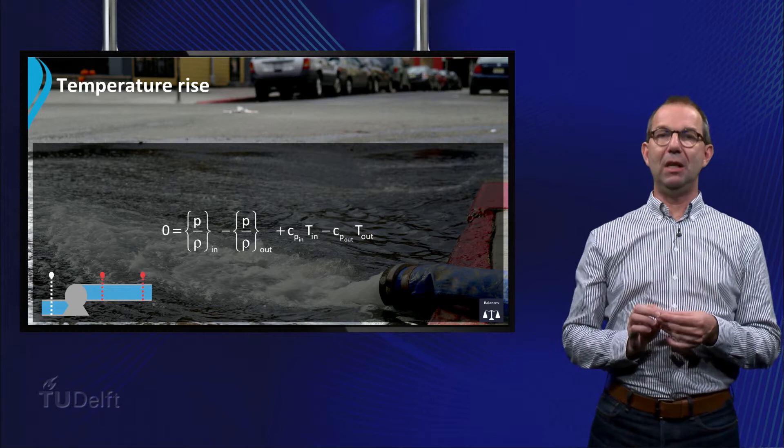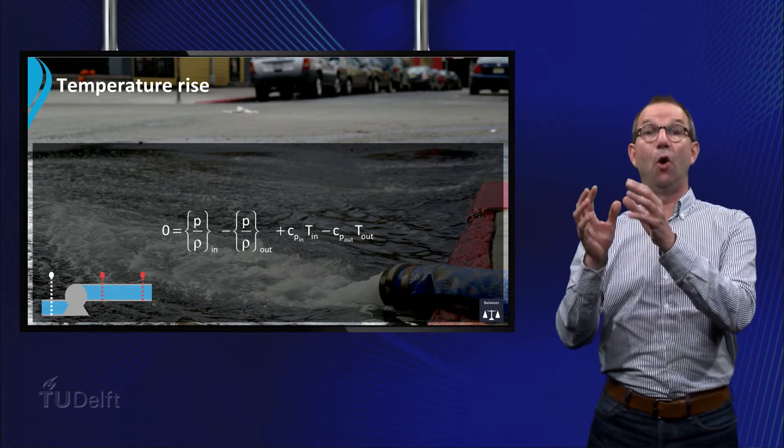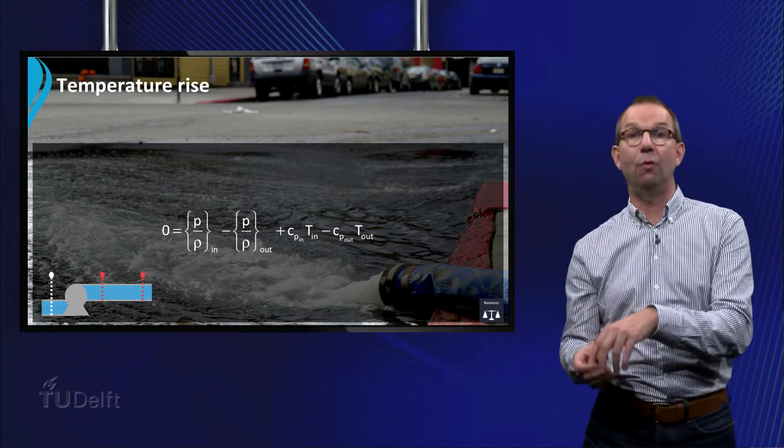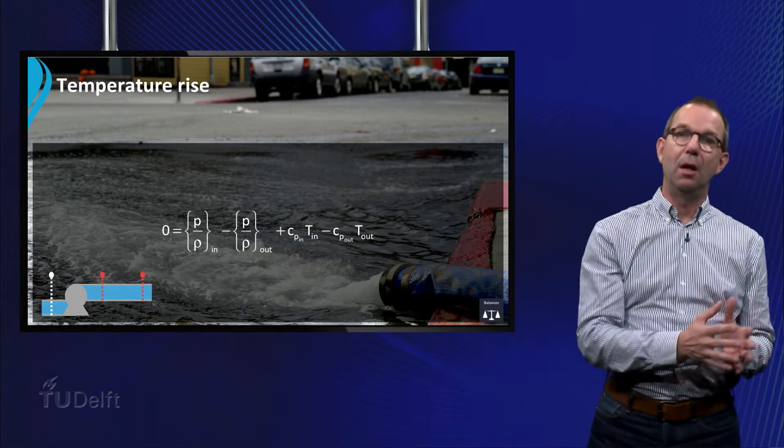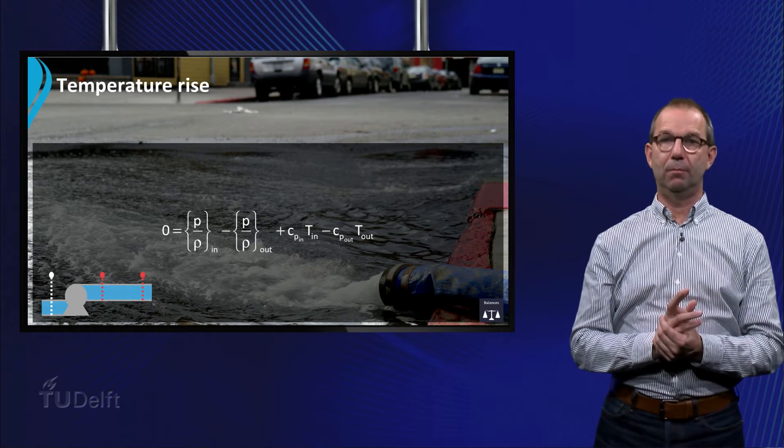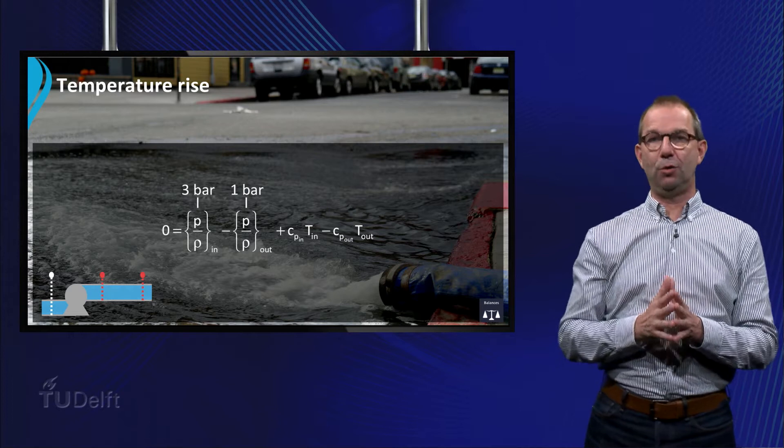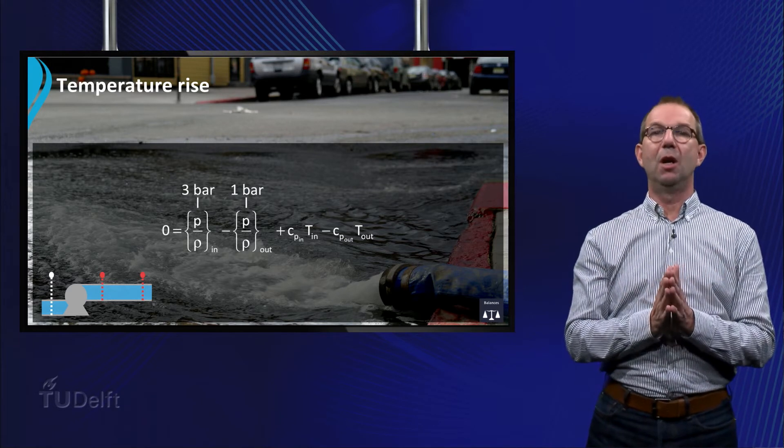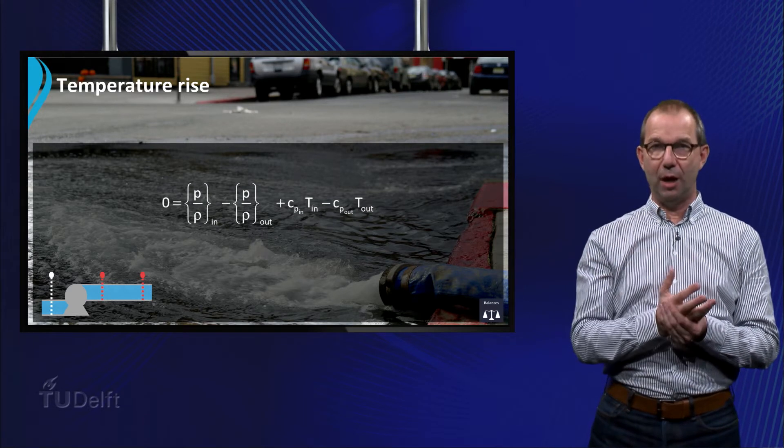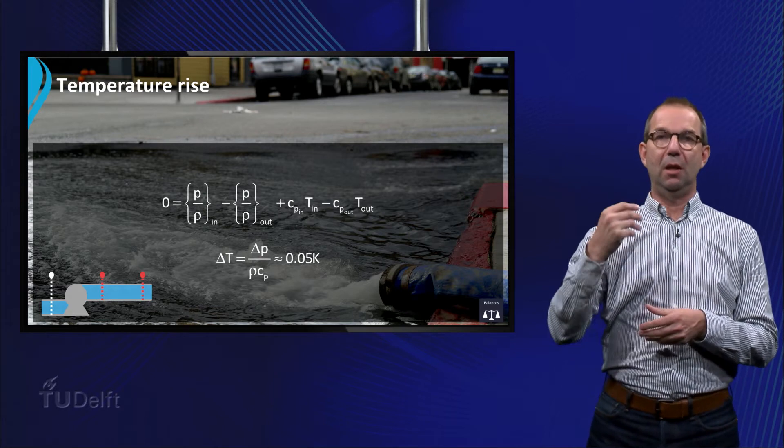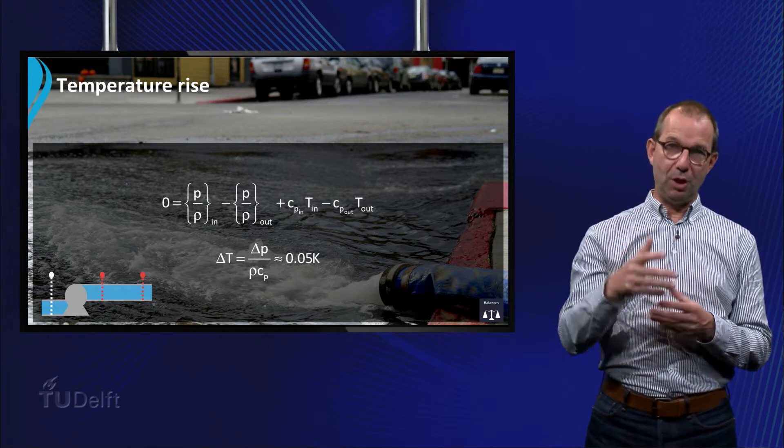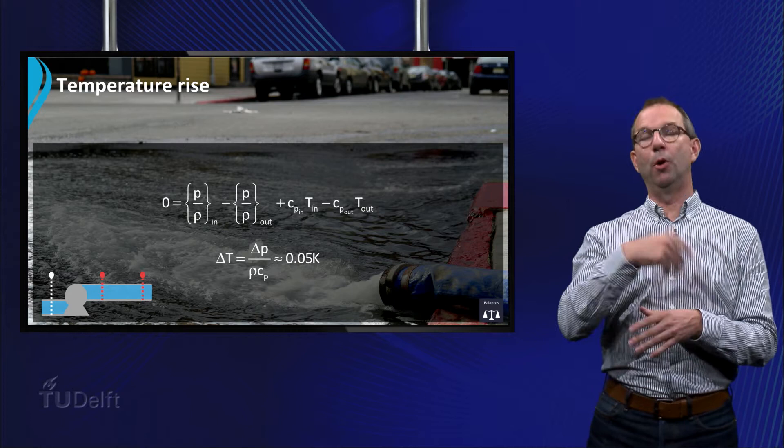Thus, we see that the mechanical energy in the form of pressure is converted into heat. Clearly friction is at work. Substituting the values for water at 20 degrees Celsius, we obtain a temperature rise of ΔT = ΔP/(ρC_p), which is in this case 0.05 Kelvin.